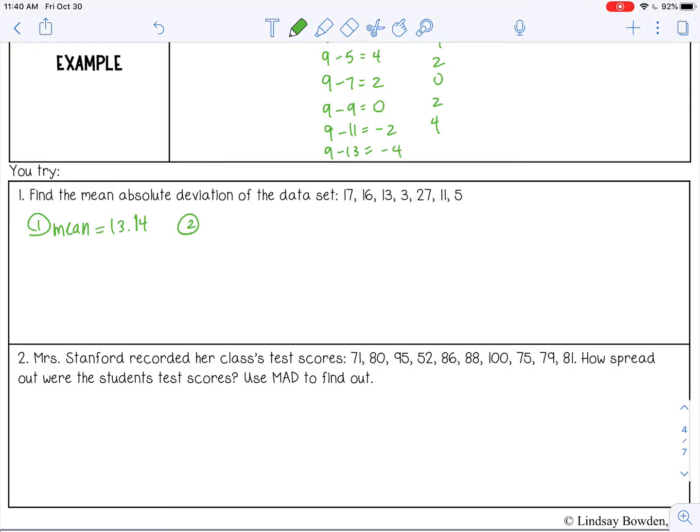And then number 2, I subtracted the mean from every number in the data set. Again, if you had a different number for your mean, you rounded differently, your numbers are going to be a little bit different, that's okay.